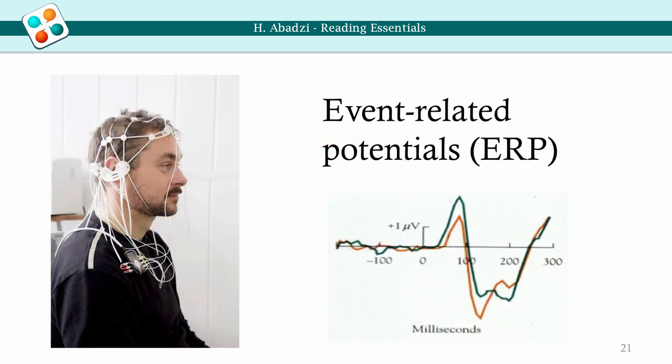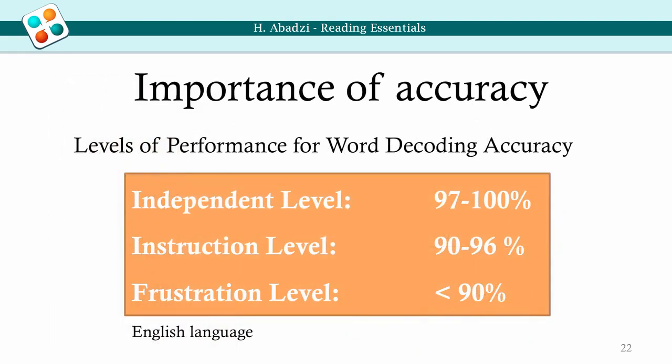Equipment for event-related potentials is portable and could be used in low-income countries for research. Accuracy is as important as speed. When students make many mistakes, they misunderstand, must re-read, and thus use up their working memory. For effortless reading, nearly 100% accuracy is needed.